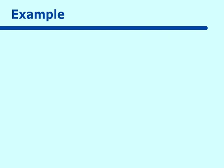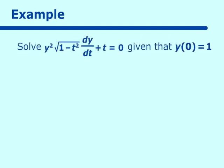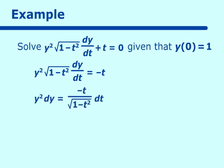Example four is more complicated: solve y²√(1 - t²) dy/dt + t = 0, with y(0) = 1. Move t to the other side: y²√(1 - t²) dy/dt = -t. Separating variables and moving √(1 - t²) and dt to the right side gives: y² dy = -t / √(1 - t²) dt.